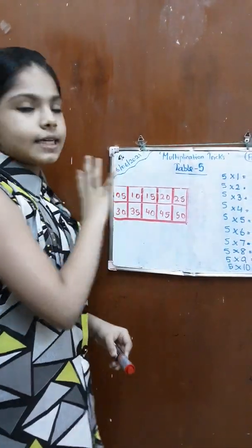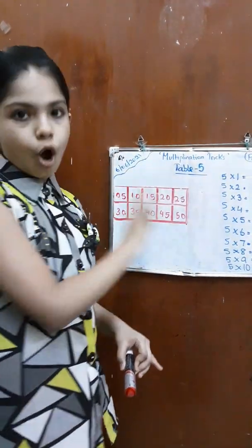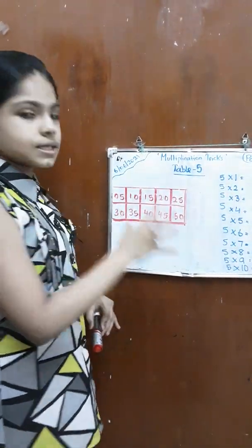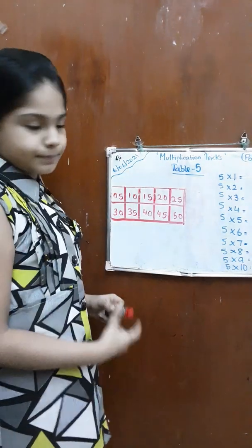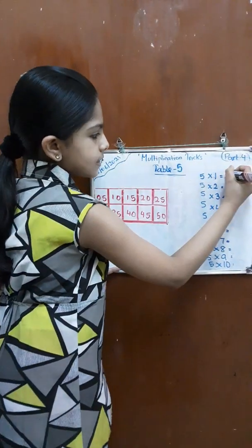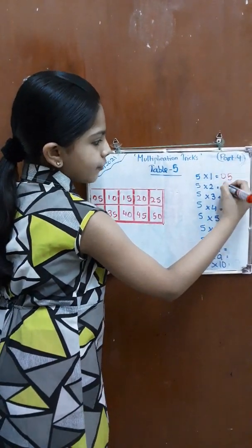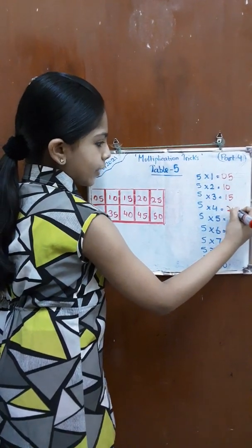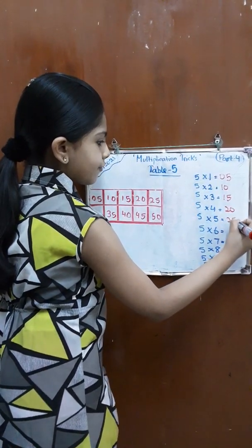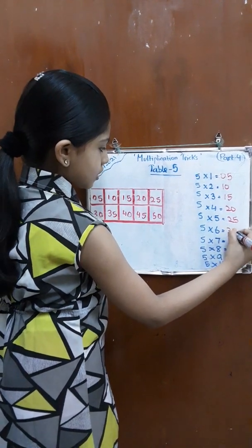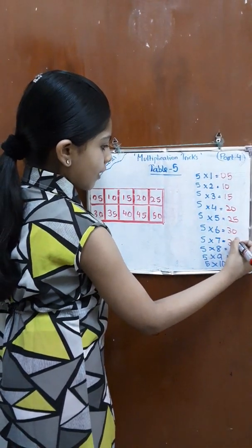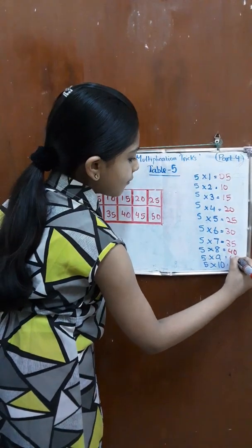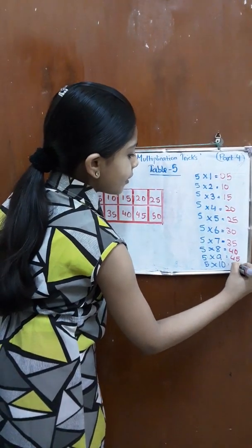Now our table is ready. We have written all the multiples. Now let's take all these numbers in order and write it over here. So it means 5, 10, 15, 20, 25, 30, 35, 40, 45, 50.